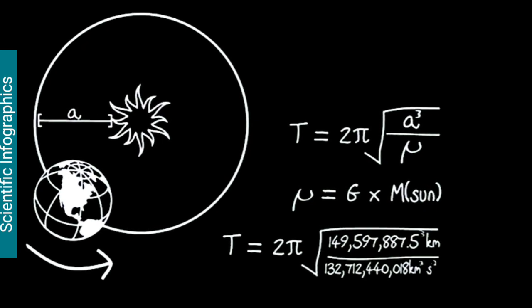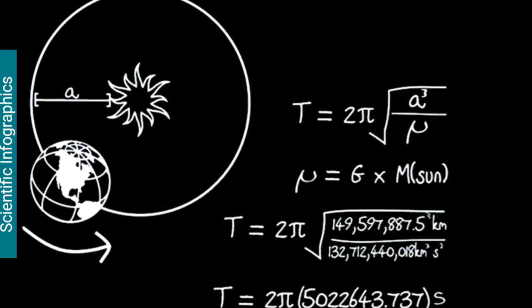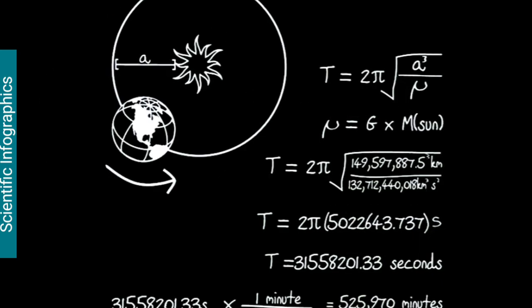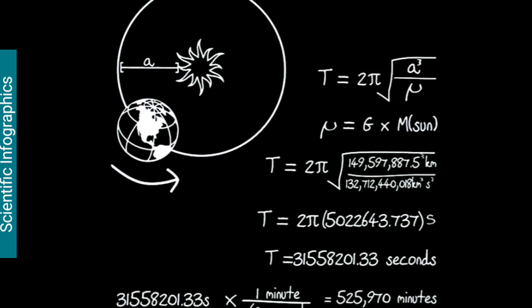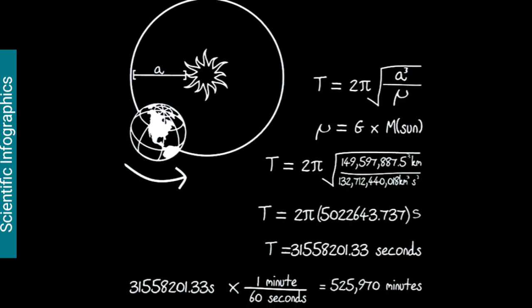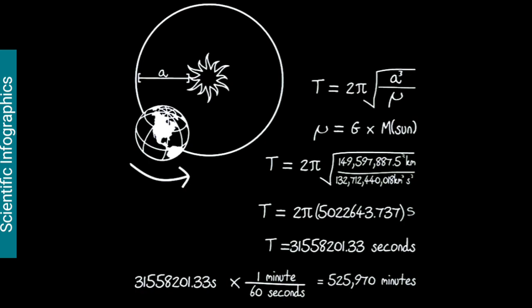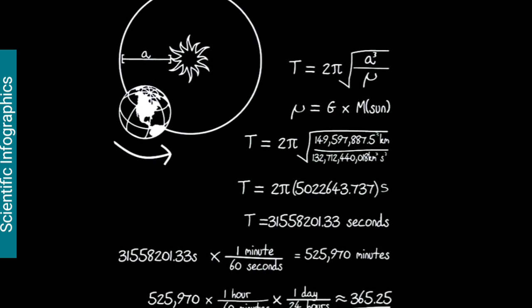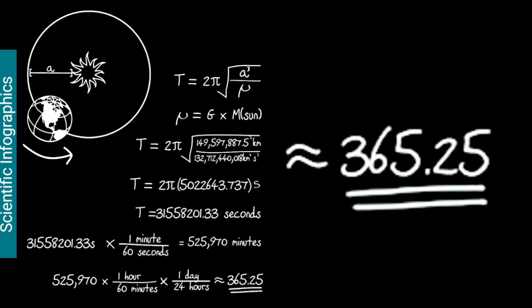Upon substituting these values and performing further calculations, we get the total time for Earth to revolve around the Sun: 525,970 minutes, which is approximately 365.25 days.